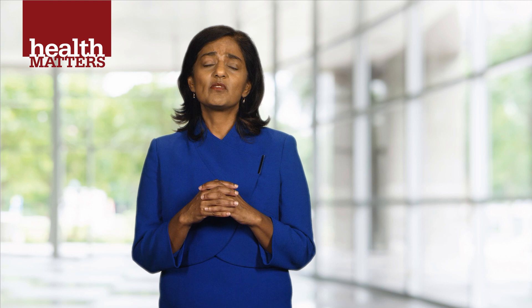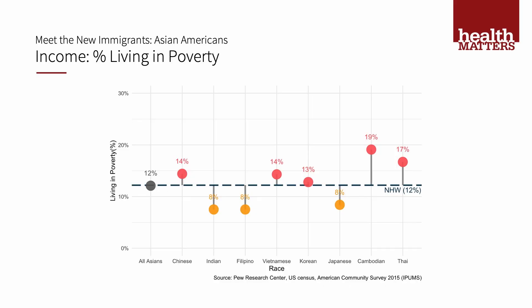Asians are often considered a model minority, but this is really a myth. When we look at all Asians, the percent living in poverty is 12%, similar to non-Hispanic whites. But when we disaggregate the Asian subgroups, important patterns emerge, with Cambodian and Thai populations having much higher rates of poverty, similar to Blacks and Hispanics in the United States. It's important to remember there are vast socioeconomic differences among the groups.